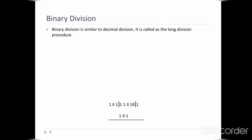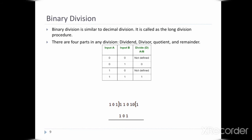Next is binary division. Binary division is similar to long division procedure. Binary division is not too difficult but can initially be a bit harder to understand than other binary operations. There are 4 parts in any division: dividend, divisor, quotient, and remainder. There are 4 rules to follow. The process is quite similar to decimal division, and it will be clearer when we look at an example.